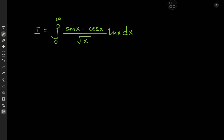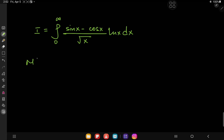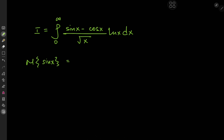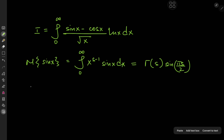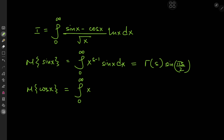The first tool is the Mellin transform of the sine and cosine functions. I've derived these transforms in a previous video using Ramanujan's master theorem — link in the description below — and I believe I made another video deriving the Mellin transform of sine x using an interesting approach; I'll link both videos in the description box. The Mellin transform of sine x is defined as the integral from 0 to infinity of x to the s minus 1 times sine x dx, and this equals gamma(s) times the sine of pi*s/2. Similarly, the Mellin transform of cosine x equals the integral from 0 to infinity of x to the s minus 1 times cosine x dx, which equals gamma(s) times the cosine of pi*s/2.